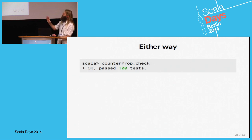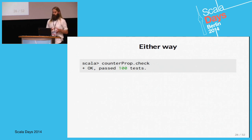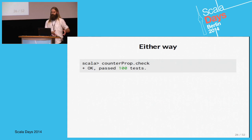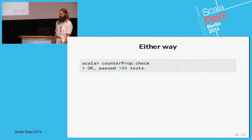We can check the property and by default it checks 100 times, meaning it generates 100 different sequences of commands and creates and runs 100 different system instances.